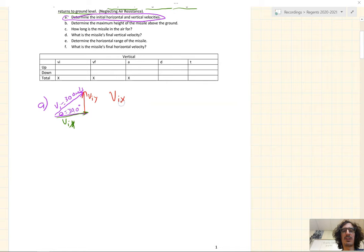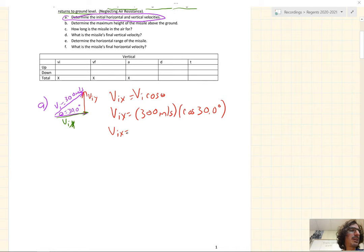VIX, the horizontal velocity, is equal to VI cosine theta. VIX equals 300 meters per second times the cosine of 30 degrees. Make sure we're in degrees in our calculators. And we get VIX to be 260 meters per second. That's the initial horizontal velocity.